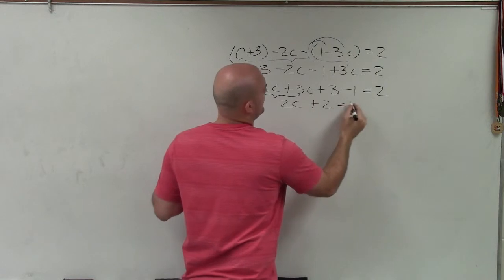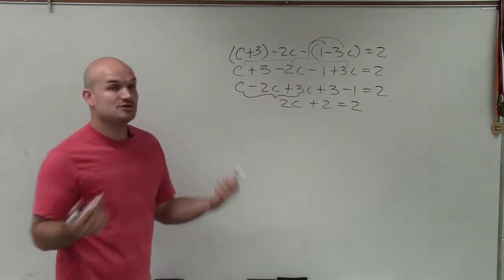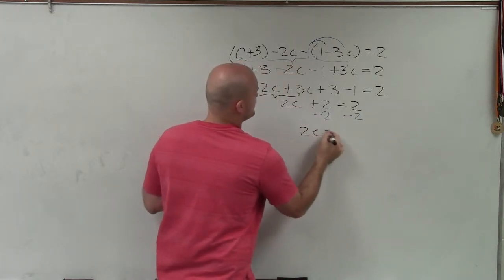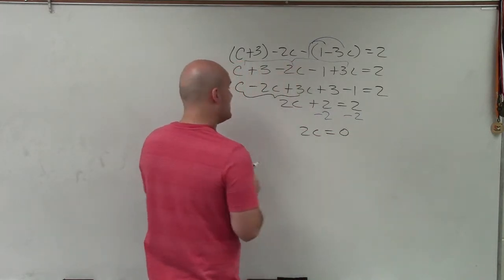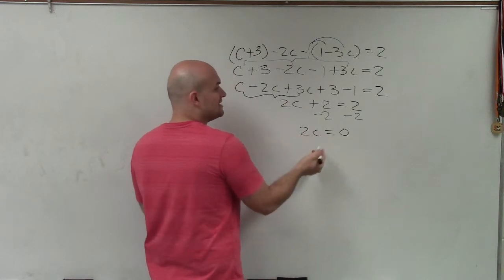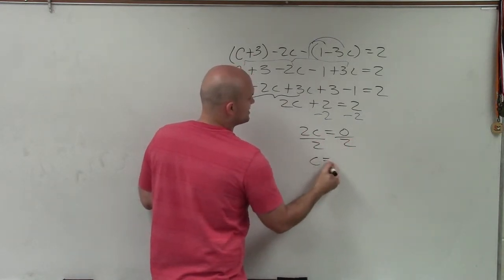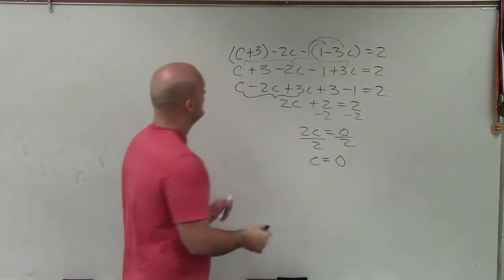So now to go ahead and solve I can subtract a 2 on both sides and therefore I get 2c equals 0. Then to solve, well 2 times any number equals 0 that c has to equal 0 but anyways I can divide by 2 and just say c equals 0.